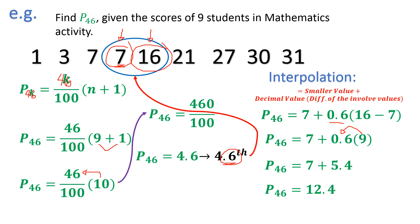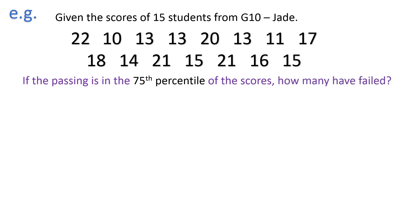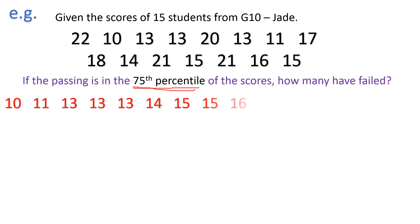Let us have a simple application. Given the scores of 15 students, if the passing score is the 75th percentile of the scores, how many have failed? First, arrange the scores ascendingly: 10, 11, 13, 13, 13, 14, 15, 15, 16, 17, 18, 20, 21, 21, 22. Don't forget to count the rewritten numbers to make sure no values are missing.